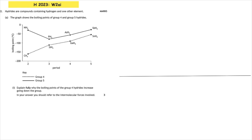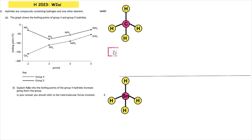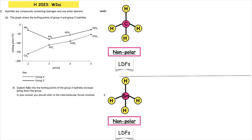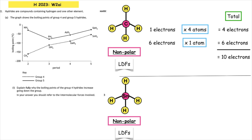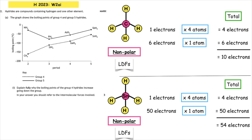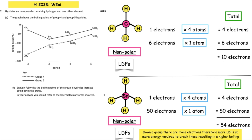Explain fully why the boiling points of group 4 hydrides increase going down the group, referring to the intermolecular forces involved. Choosing CH4 and SnH4 as examples: both are symmetrical, so they are non-polar and contain only LDFs. CH4 has a total of 10 electrons per molecule, whereas SnH4 has a total of 54 electrons per molecule. As you go down the group of hydrides, there are more electrons and therefore more LDFs, so more energy is required to break these, resulting in a higher boiling point.